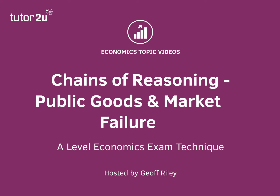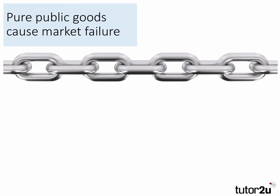Let's take a quick example. We're looking here at public goods and market failure. So we're trying to explain, using a chain of reasoning, how pure public goods cause market failure. Let's have a look at an example here.